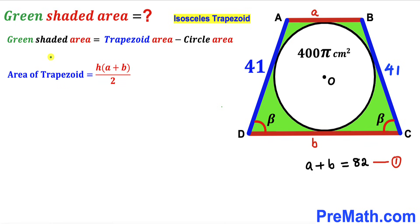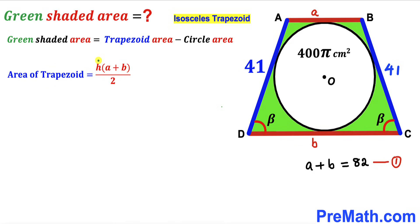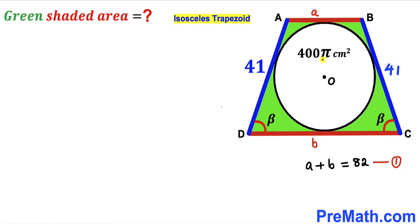Recalling the trapezoid area formula: Area = h × (a + b) / 2. We know a + b = 82 from equation one, so now we only need to find the height h of the trapezoid.